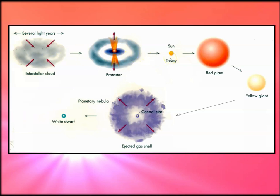Then you'll be a main sequence star like our Sun, you have that helium flash and become an enormous red giant, beginning to warm up. You compress and gravitationally collapse, becoming a yellow giant. Then after an explosion, you're left with a planetary nebula and a white dwarf. We'll look more at explosions on the high mass side.